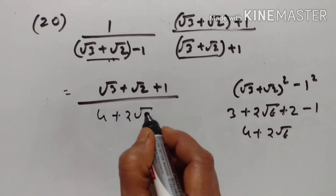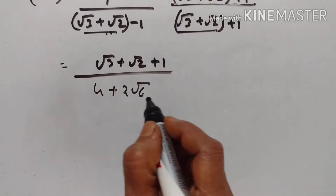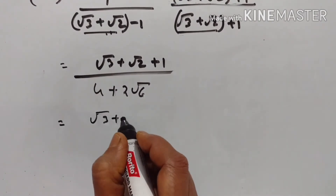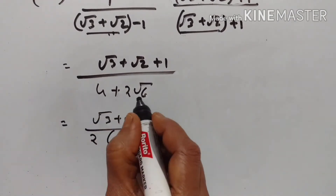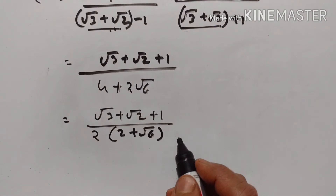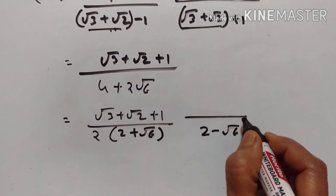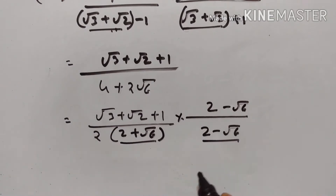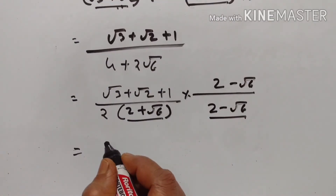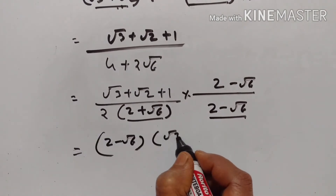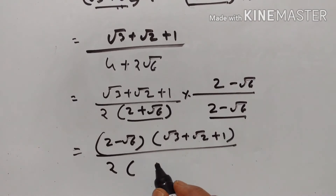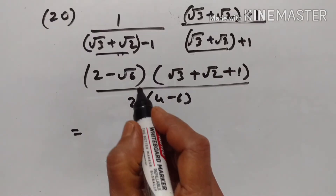We have the denominator as 4 plus 2 square root of 6. But this is still an irrational number, so we have to rationalize it again. Taking 2 common from the denominator gives 2 into 2 plus square root of 6. The least rationalizing factor is 2 minus square root of 6. Multiply the numerator also by 2 minus square root of 6. This forms A plus B into A minus B, giving A squared minus B squared. A squared is 4, minus B squared is 6.